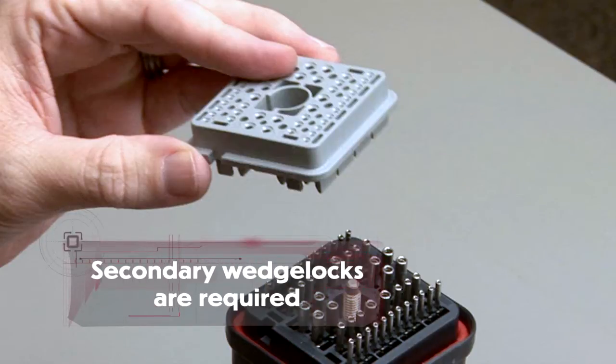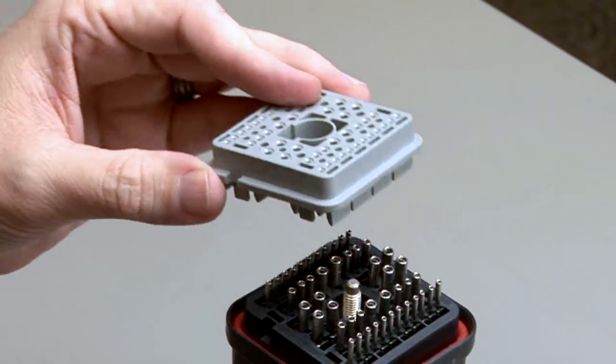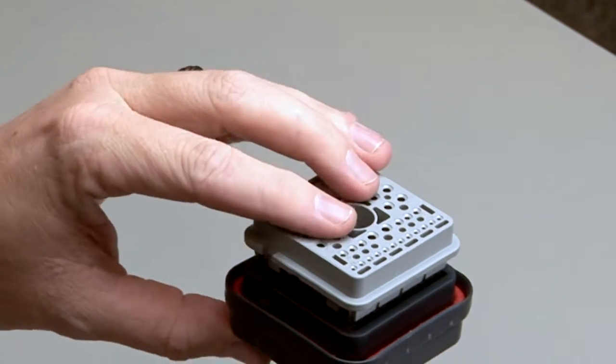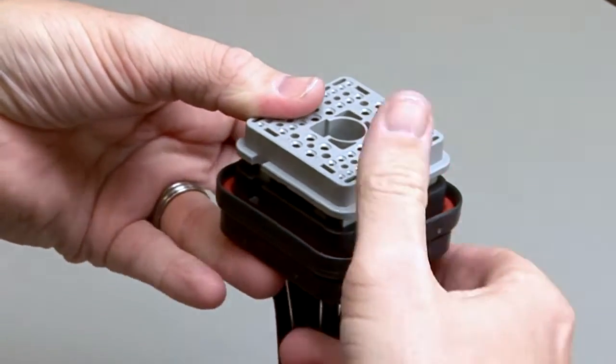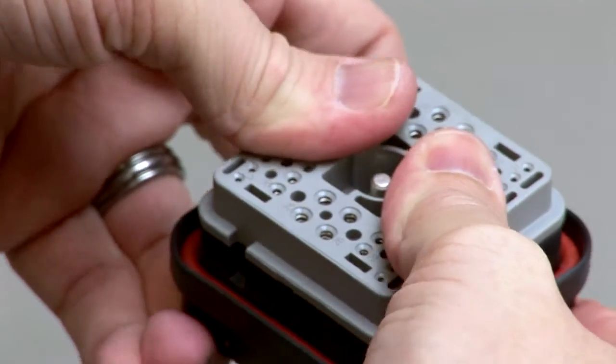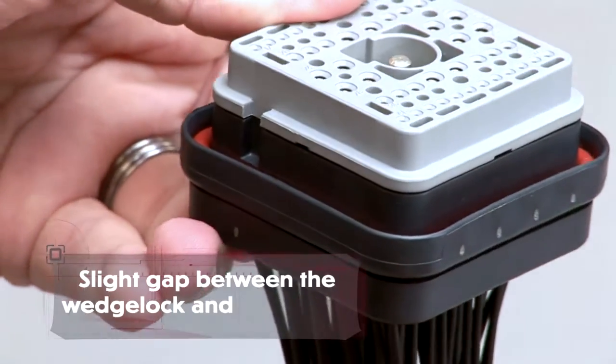Wedge locks ensure proper alignment of the contacts. Insert the wedge lock by lining up the keyway. Wedge locks should be pressed firmly in place, with only a slight gap showing between the wedge lock and connector.